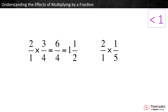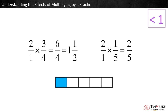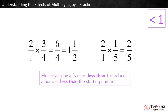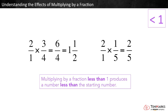When we multiply 2 times 1 fifth, we get 2 fifths, which is also less than 2. This makes sense — multiplying by 1 fifth is like taking 1 fifth of something. That's less than one whole group, so it would be less than what you started with. Multiplying by a fraction less than 1 produces a number less than the starting number.